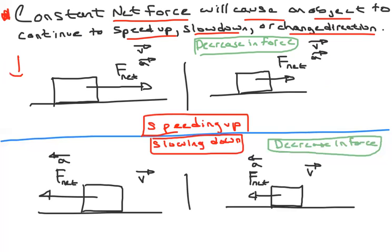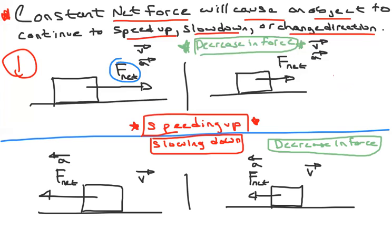Here's an example. In the first situation, the object is speeding up. Then the net force decreases — that doesn't mean it changes direction, just that there's less net force. Both situations still have the object speeding up. Just because the net force decreases doesn't mean something wild happened.